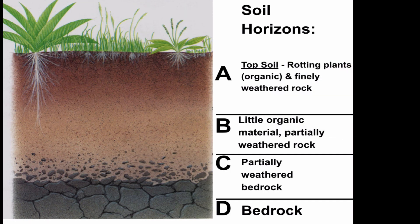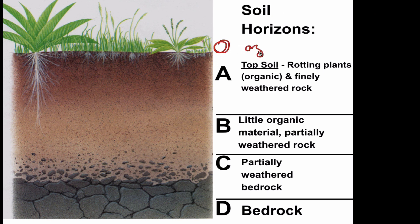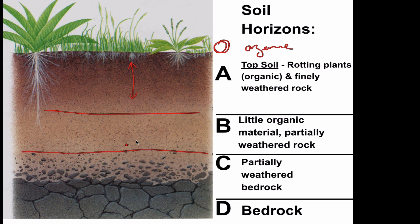We have a number of different soil horizons, or soil layers. At the top is the O horizon, our organic layer containing all our plants. Then we have A, our topsoil — you can see the color changes as we go down. The A horizon contains rotting plants, organic material, and finely weathered rock. The B horizon has little organic material and partially weathered rock. As we get to the C horizon, or regolith, it's bedrock broken down into bigger pieces, and finally the D horizon is bedrock.